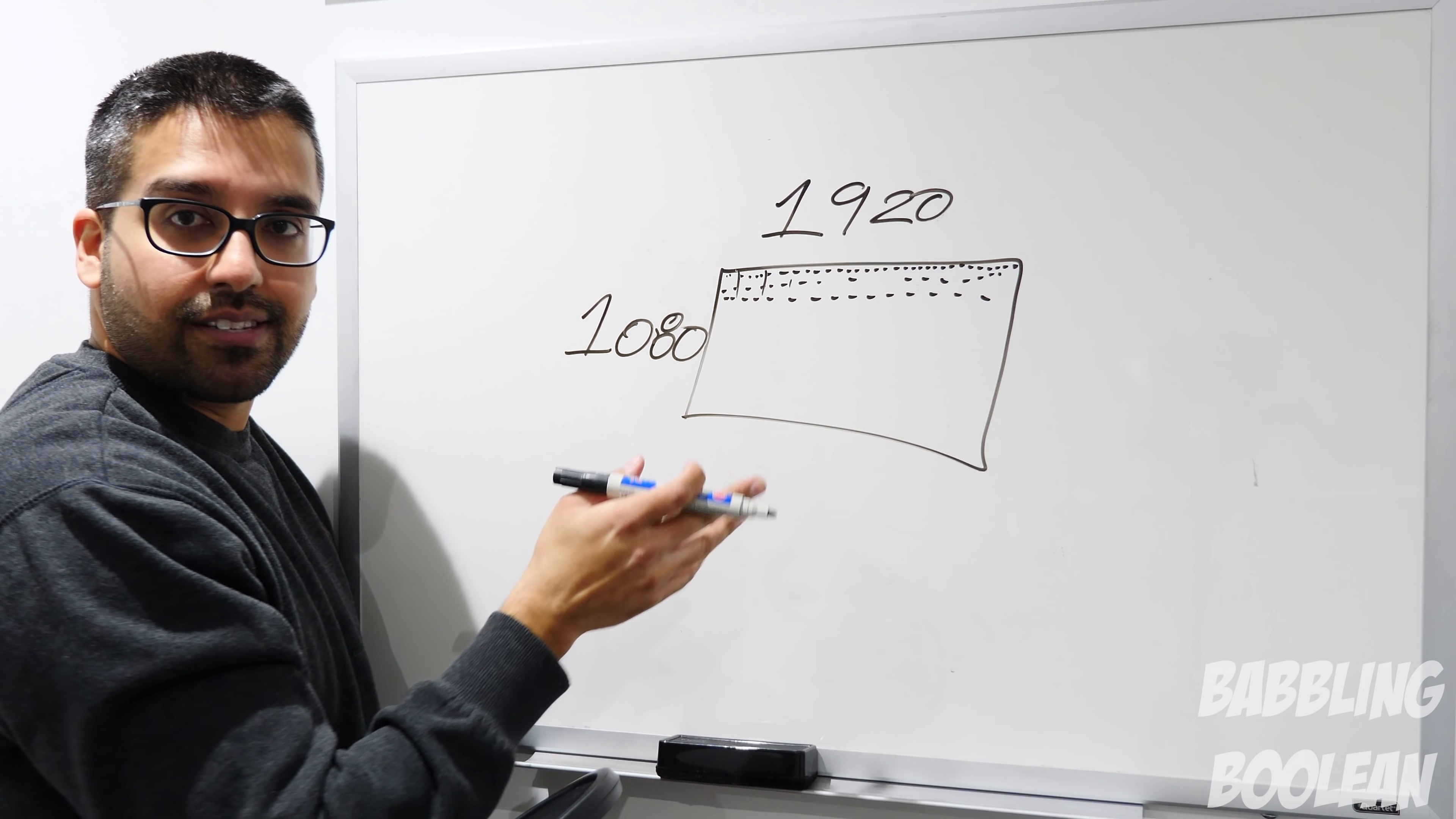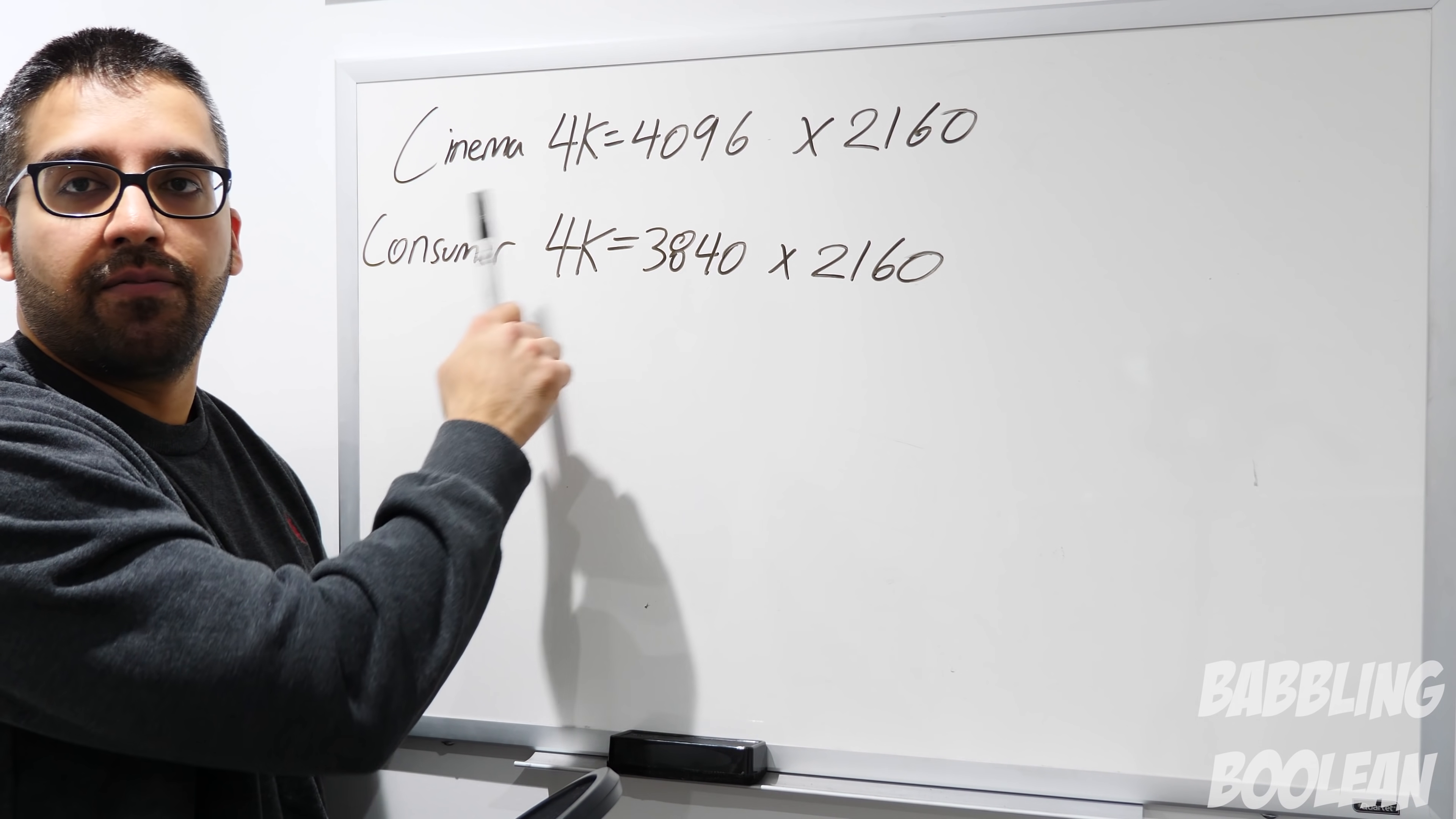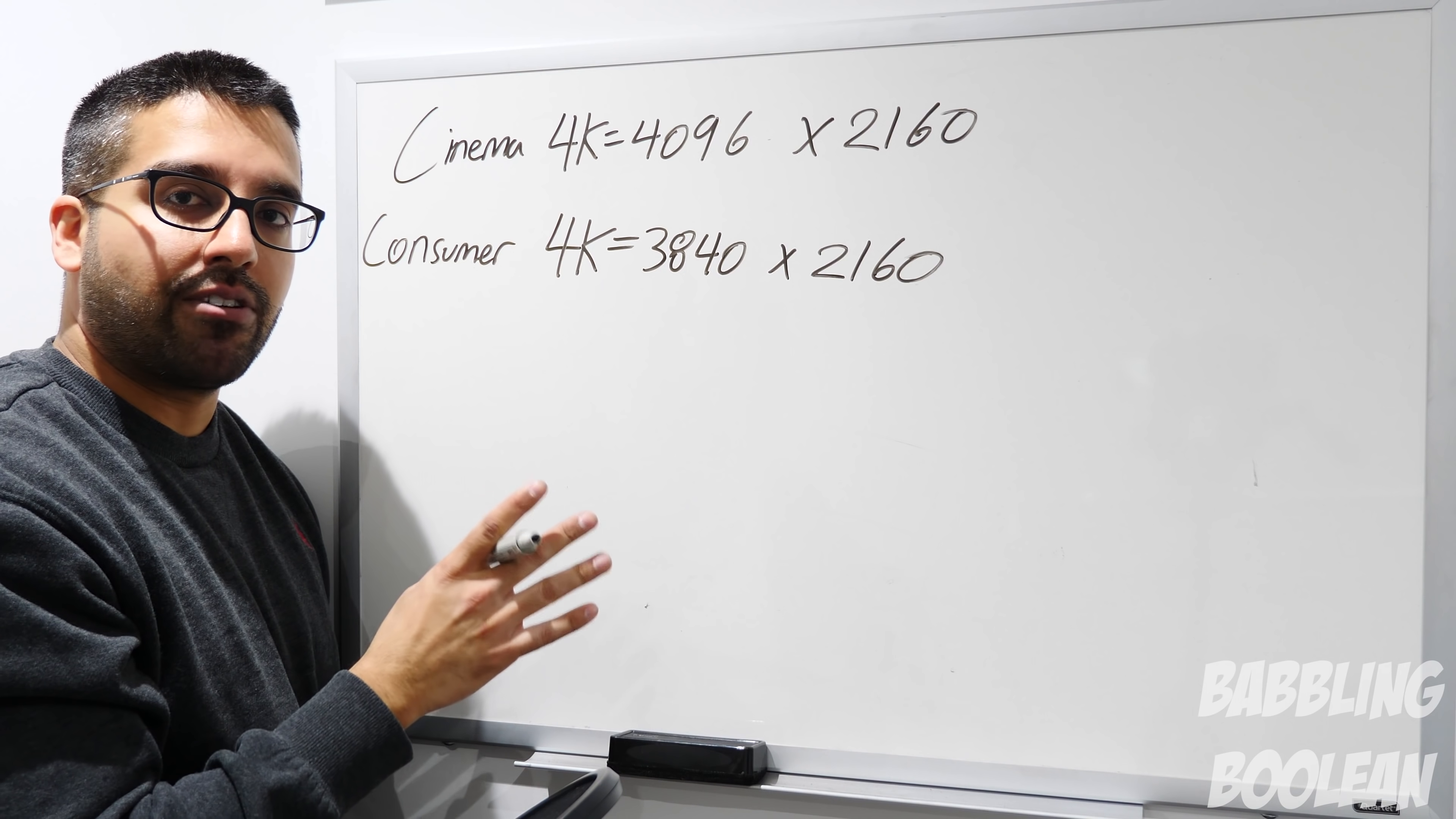4K is where things are a little shady, I guess you could say. So 4K, the initial standard, is cinema 4K, and it has a resolution of 4096 by 2160. Cinema 4K is designed for cinemas, makes sense, right?